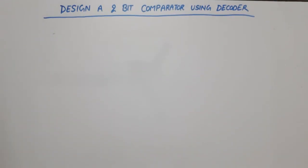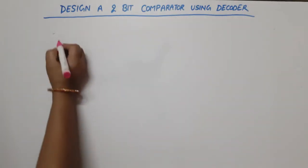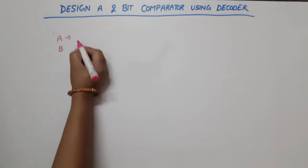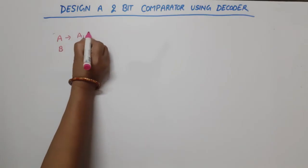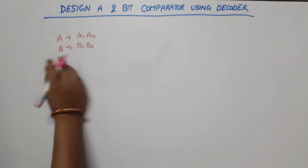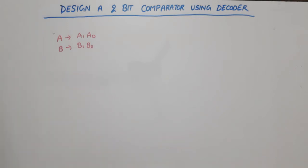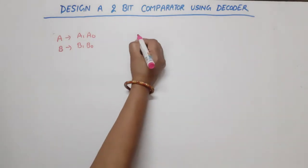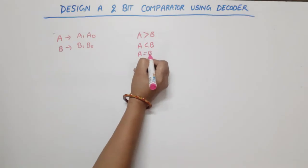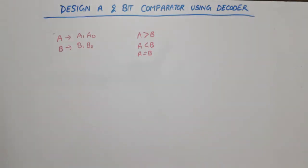Hello everyone. In this video lecture of Digital Electronics, I am going to discuss Comparator using Decoder — specifically a 2-bit Comparator. It means the two numbers are A and B. A contains 2 bits A1 and A0, and B contains 2 bits B1 and B0. We have to compare them: A is greater than B, A is less than B, and A is equal to B.